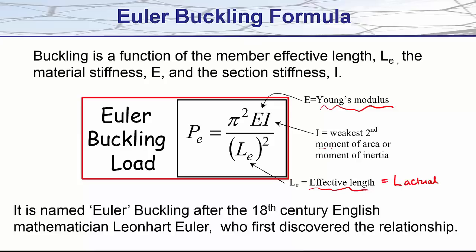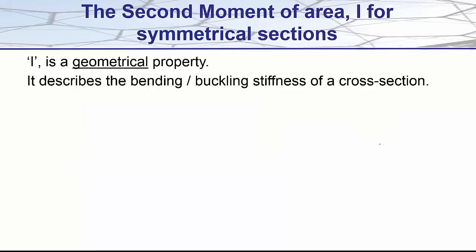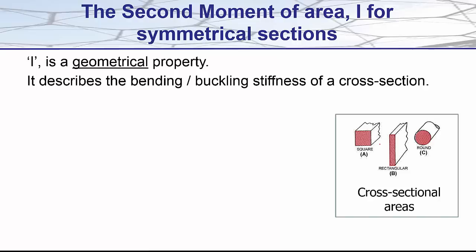And so now I'll briefly introduce you to the second moment of area, sometimes referred to as the moment of inertia of a section. I is a geometrical property that describes the bending or the buckling stiffness of a cross-section. It's based on the cross-sectional area of a section, the cross-sectional area being the area exposed when you cut through a member perpendicular to its length. You'll learn how to calculate this geometric property for all types of cross-sectional areas later in the course.